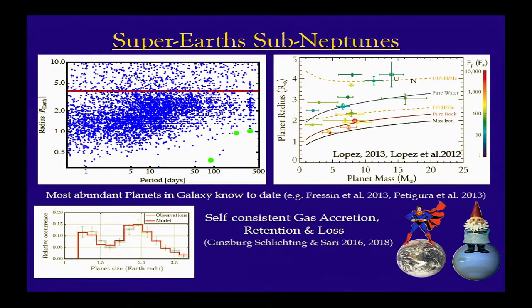If you plot a histogram of their relative occurrence versus size, you see a double-peaked distribution. One population is roughly 2.4 Earth radii and the other is significantly smaller, maybe 1.4 Earth radii. The question is: should we think of them as two populations that formed as two populations — perhaps terrestrial planets on one side and analogs to Uranus and Neptune on the other? Or is this really one population that formed in one common way and then through evolution appears to us as two populations?